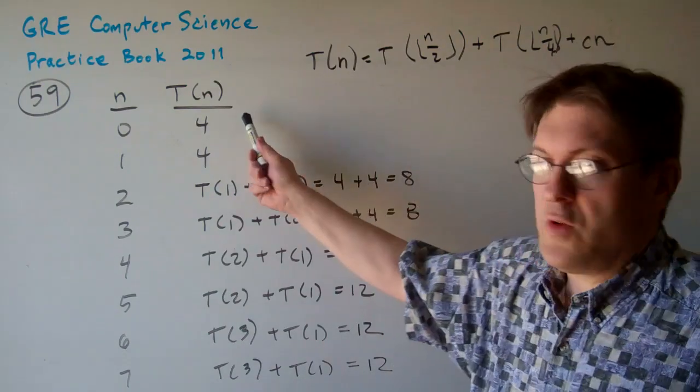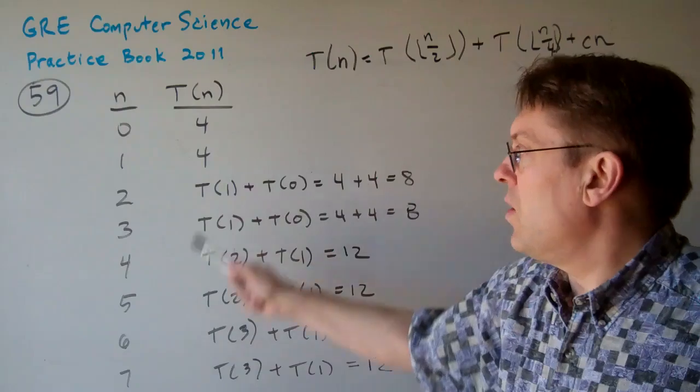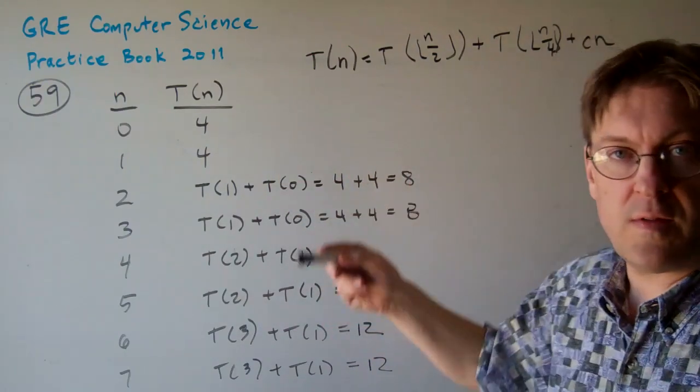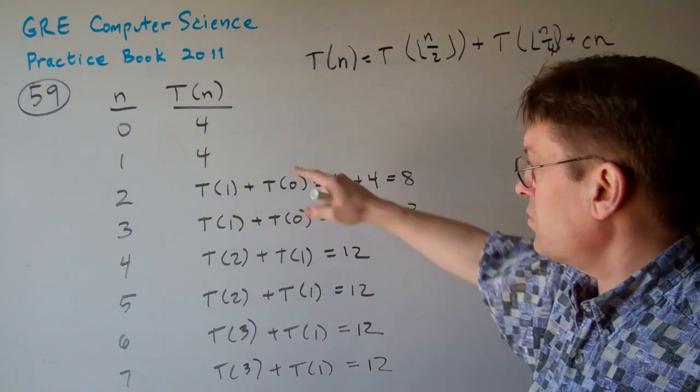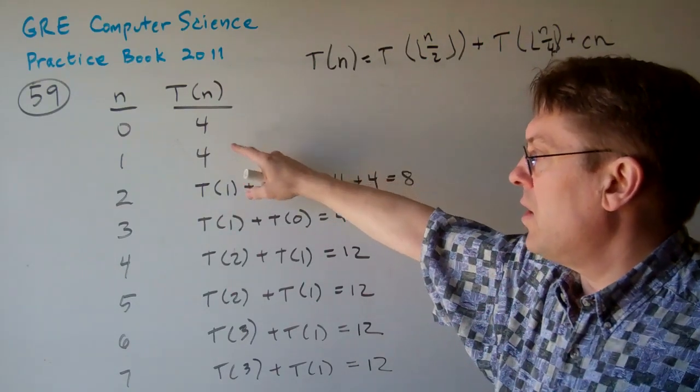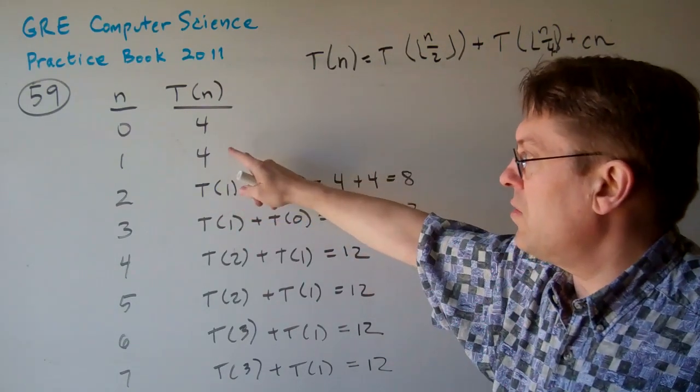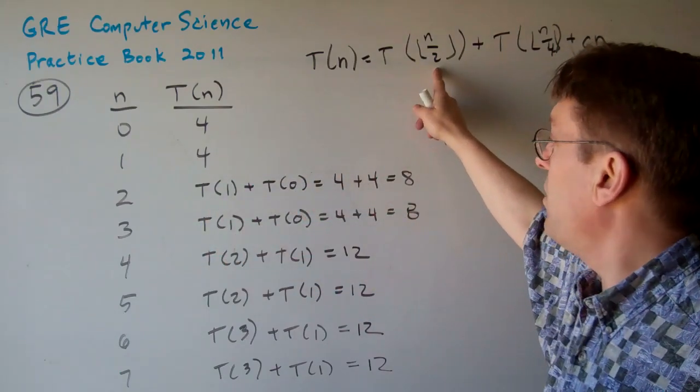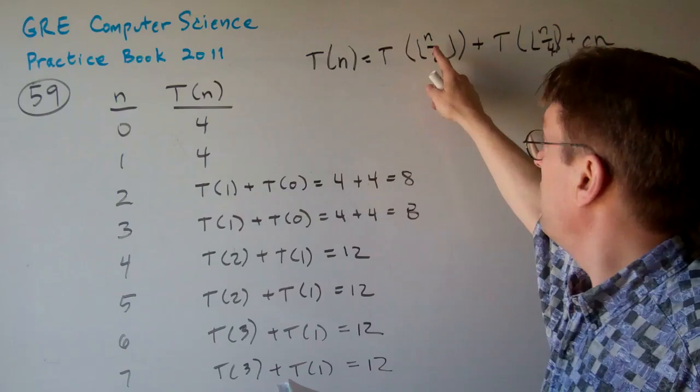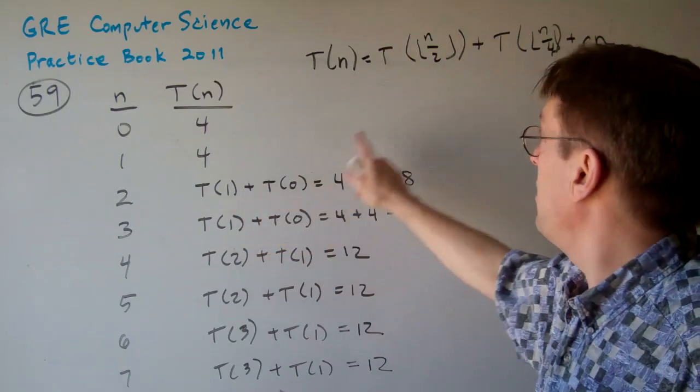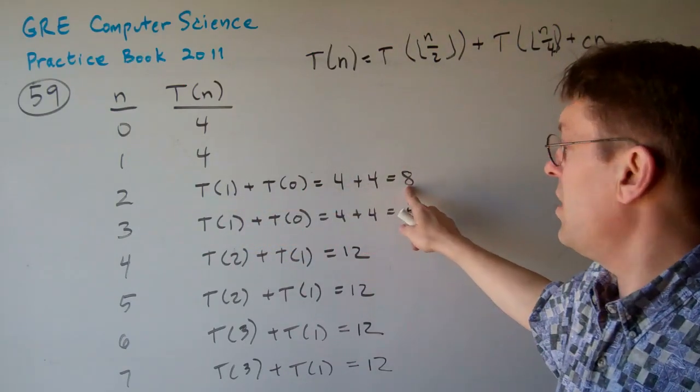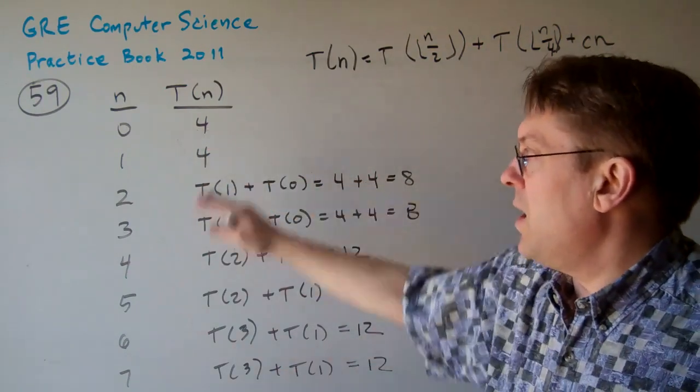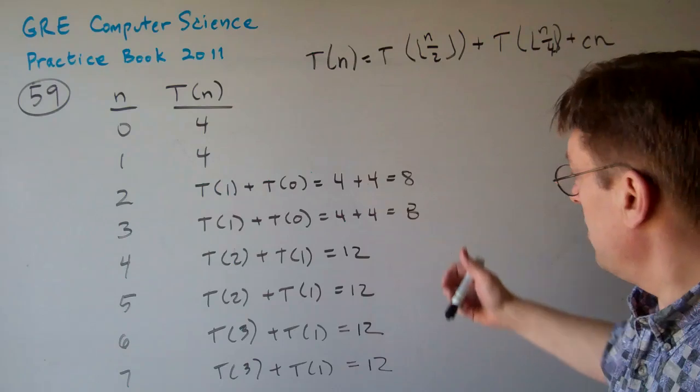If you do the math out and you just say, given n, what is T of n? And I just discounted this constant C of n. What you end up getting is, n of 0 is 4, as given in the equation, 1 is 4, 2 would be n divided by 2, which is 2, which would be 1, right? So it's T of 1 plus T of 0 plus T of n. It's going to end up being 8, 8, 12, and so forth. So you can basically write down n and then write down T of n and look at the results.